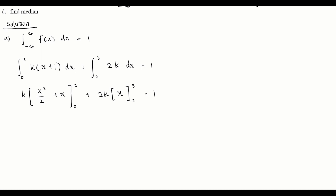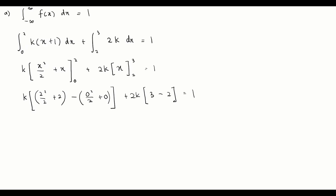Substituting the limits: the first part gives k times (4/2 + 2) = 4k, and the second part gives 2k times (3−2) = 2k. So 4k + 2k = 1, which gives 6k = 1, therefore k = 1/6.